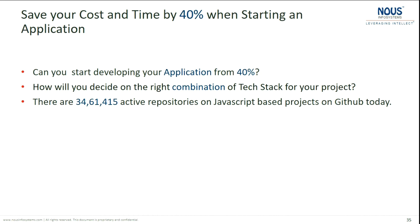Now we can see the benefits of the Uber UI framework. Saving your migration cost is one feature. The next core feature is saving your cost and time by 40% when you start an application. Three important questions: can you start developing your application from 40%? How can somebody start developing from 40%? What is that 40% we are providing?